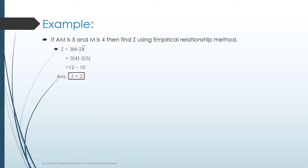So I will use the formula z equals 3m minus 2x bar, where my m is 4 and x bar is 5. So it is 3 times 4 minus 2 times 5, which equals 12 minus 10. And the final answer is z equals 2.